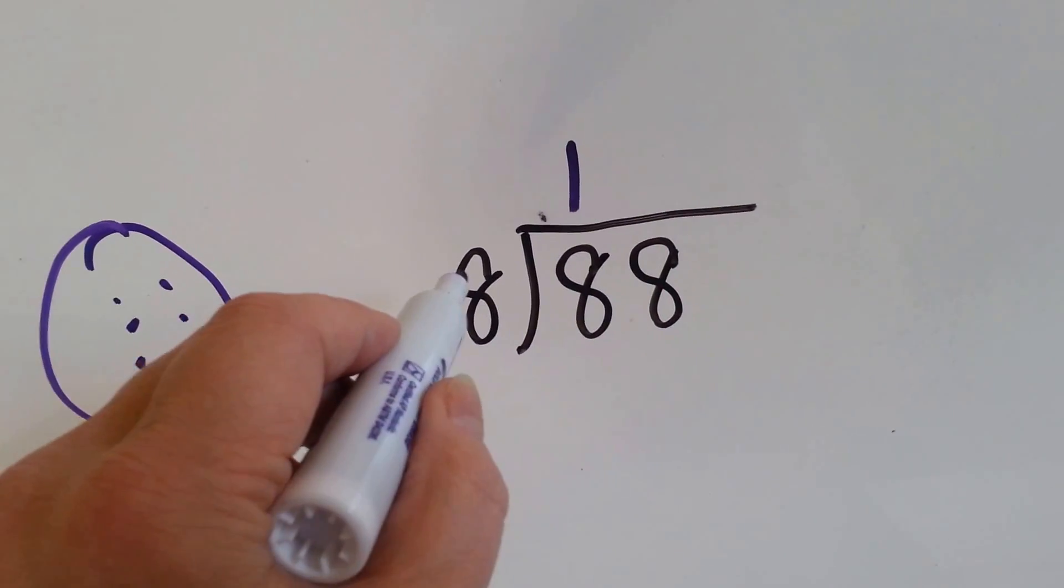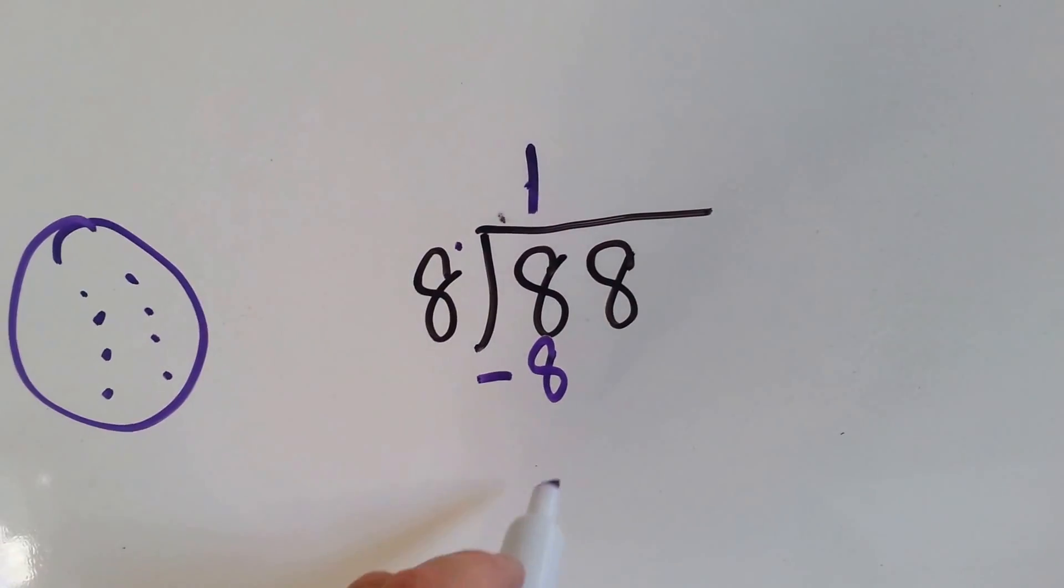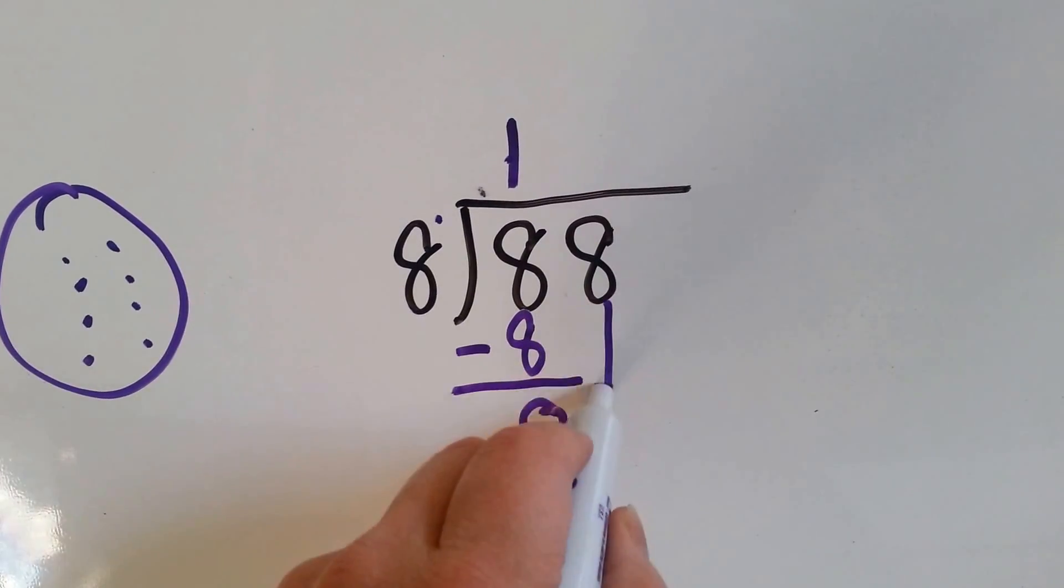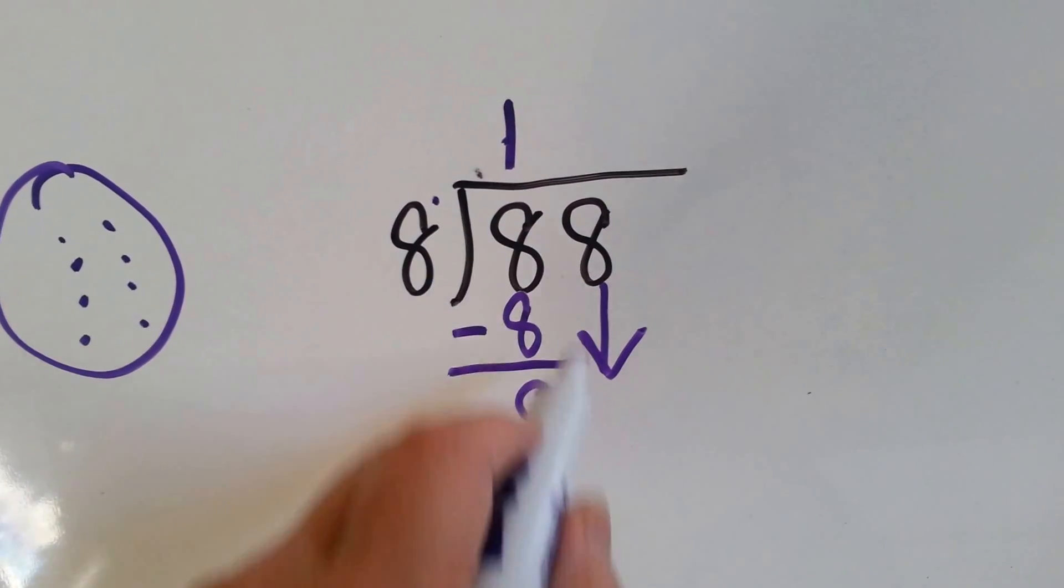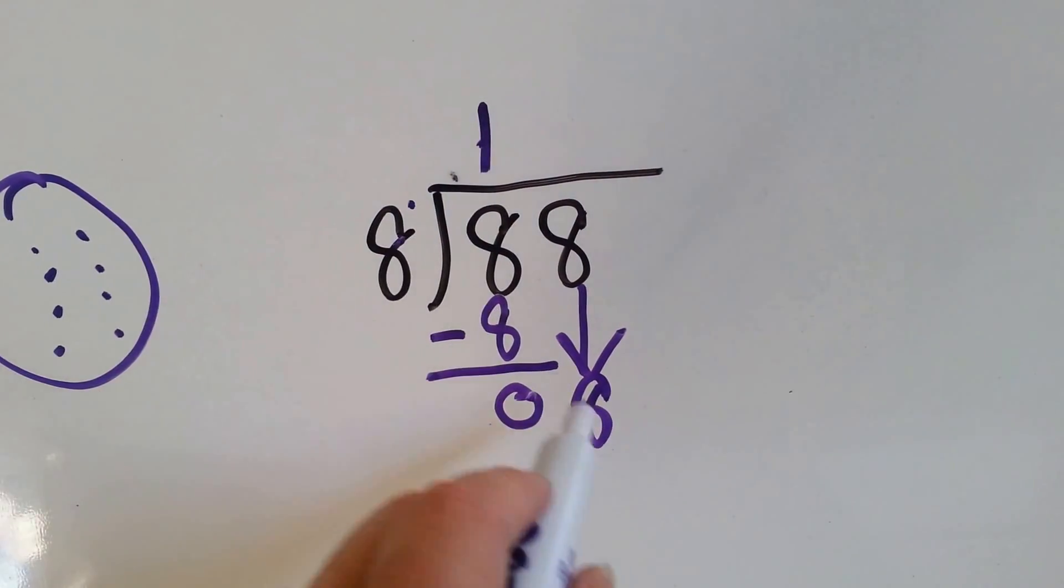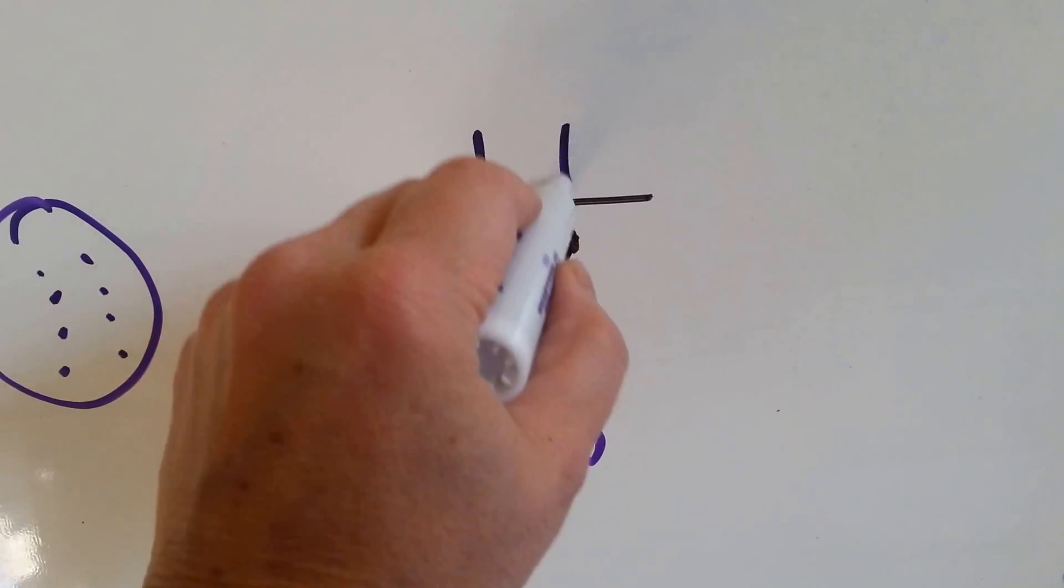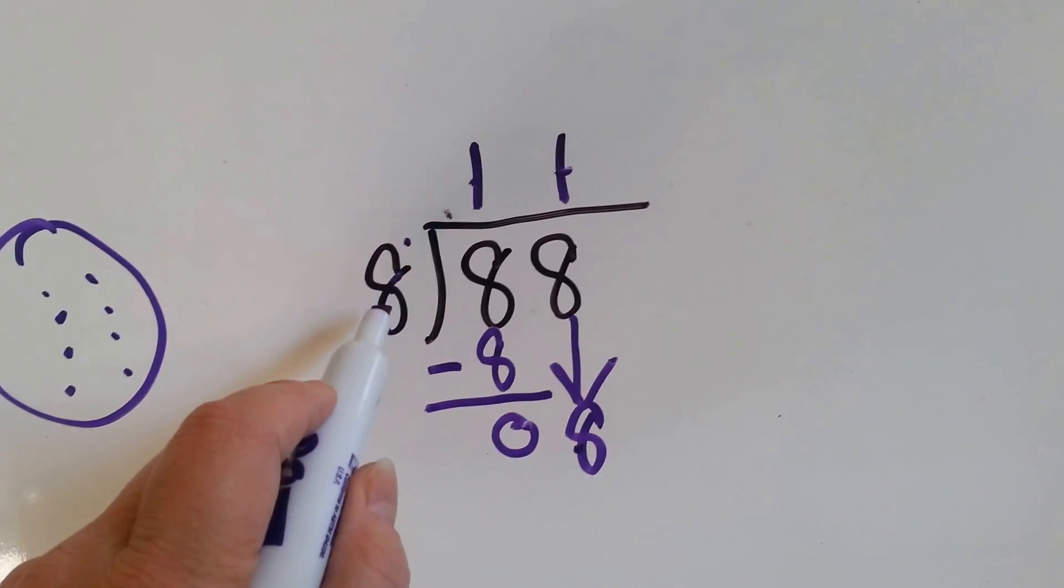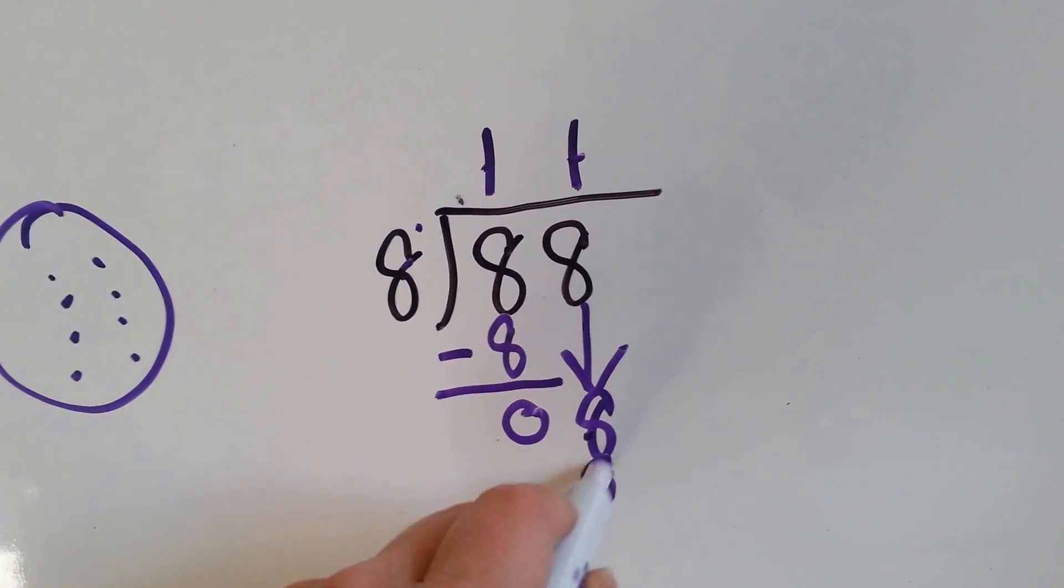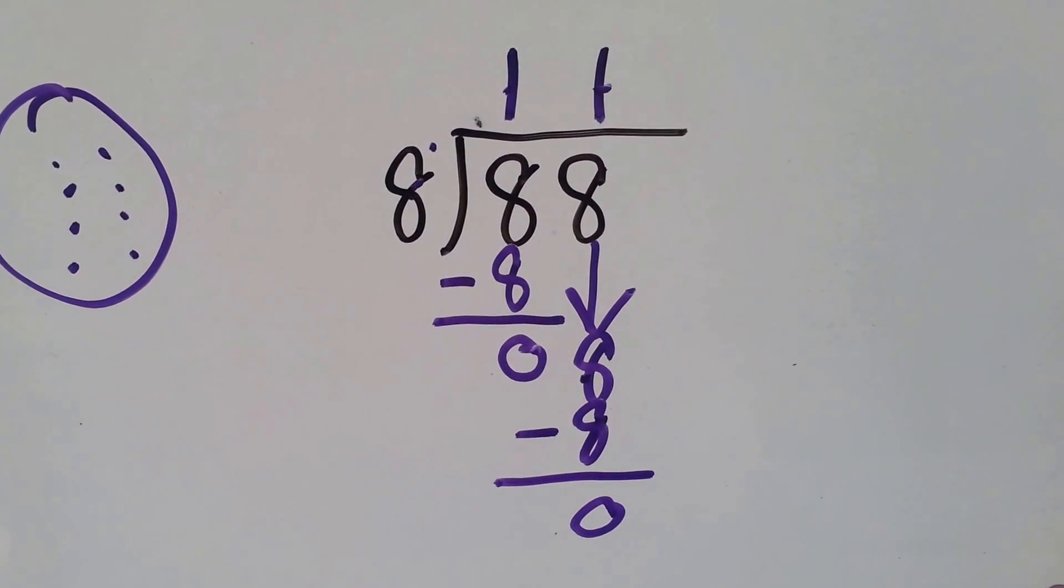Now we do our multiplication. 8 times 1 is 8. We subtract it, we get 0. And now it's this one's turn to come down. See? And we put that 8 here. And we say, can 8 fit into 8? Yes, we learned that from this one. One time. 8 times 1, we did this one. Now we're going to say is 8, we're going to do our subtraction and get 0. See how we did that?